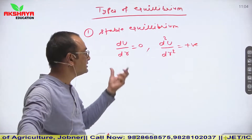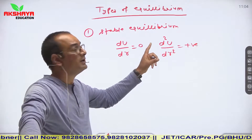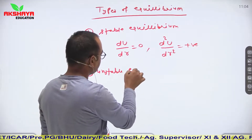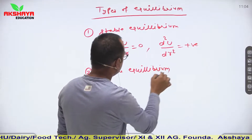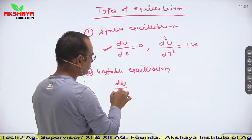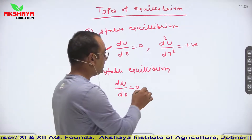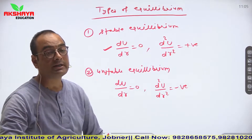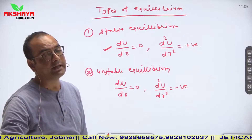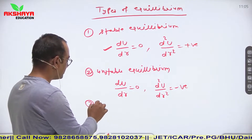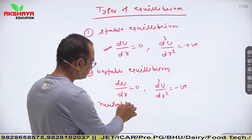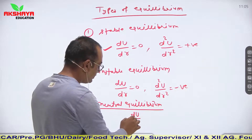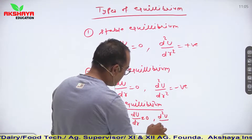Two conditions apply: first, dU/dr = 0, and second, the second-order differentiation of potential energy is positive. For unstable equilibrium, dU/dr = 0 but d²U/dr² is negative — the second order differentiation with respect to position vector is negative. For neutral equilibrium, both dU/dr and d²U/dr² are equal to zero.